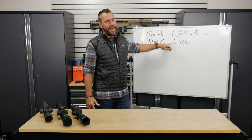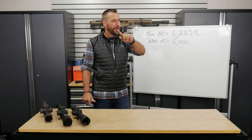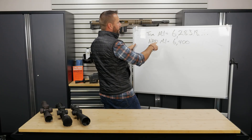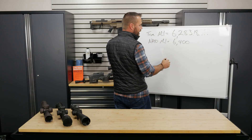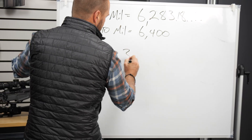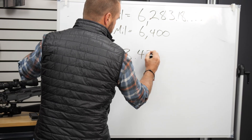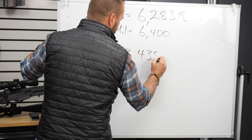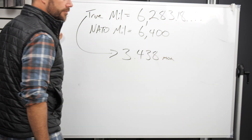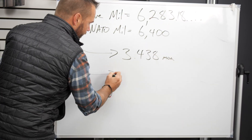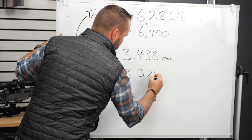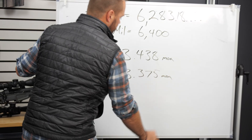We can focus more on the NATO mills. If we do these conversions to figure out how many true mills equal a minute of angle: one true mill equals 3.438 minutes of angle, and a NATO mill equals 3.375 minutes of angle.